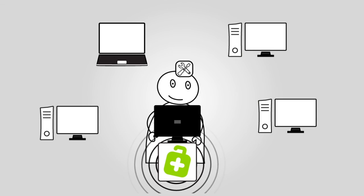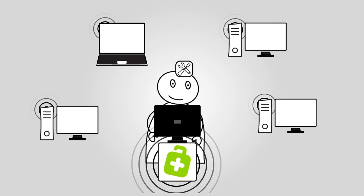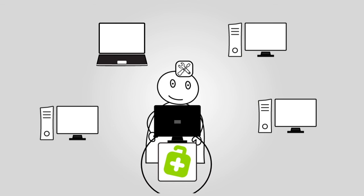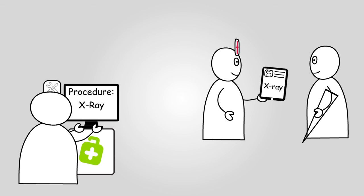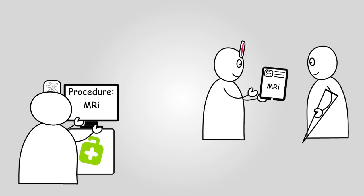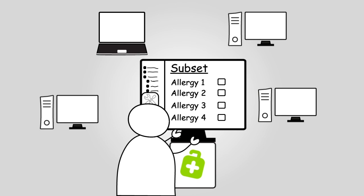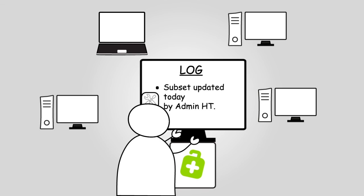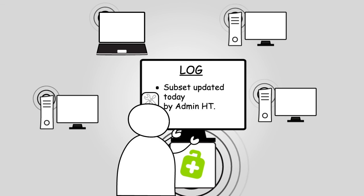Health Term connects all your systems and updates them centrally, acting as a broker, in real time. So when you need to change your master data because your hospital now uses a new procedure, you simply make the change in Health Term. Or when you would like to share specific codes for allergy, just select them using the subset tool to create a subset. And that is it. The changes have been made with a full log and all systems are instantly updated, hassle-free.